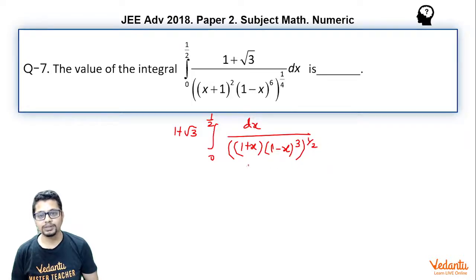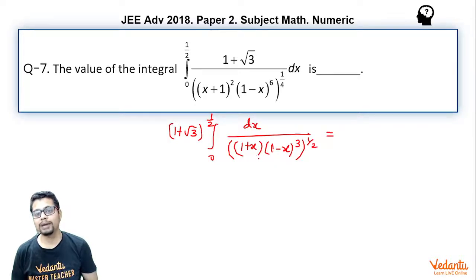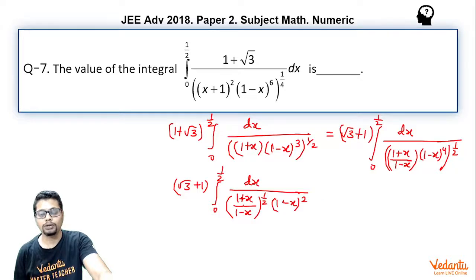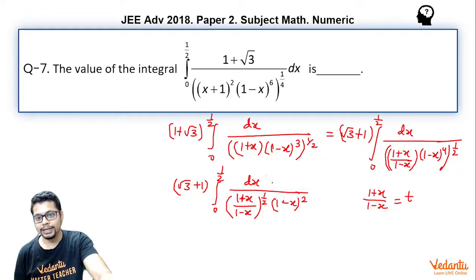The typical way to approach this is to divide and multiply by (1 − x) inside this power 1/2. So this becomes (√3 + 1) times the integral from 0 to 1/2 of dx divided by [(1 + x)/(1 − x)]^(1/2) times (1 − x)⁴ to the power 1/2, which is basically (1 − x)².